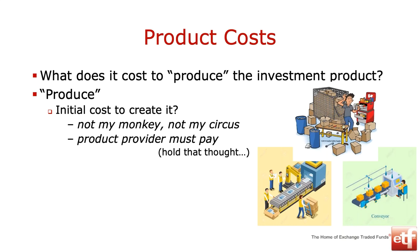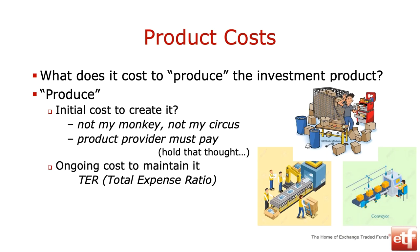More important is the cost to maintain an investment product, and it introduces the first of many TLAs - three-letter acronyms - we're going to be talking about tonight. This one is a TER, the total expense ratio, something that over the years we've become a lot more familiar with in investment circles. But what is a TER, and why is that not good enough in terms of cost disclosure? Not good enough to the extent that we now have TC - transaction costs - added to it, giving us our TIC, the total investment charge.